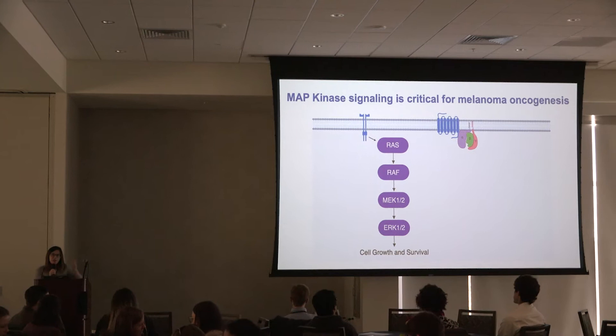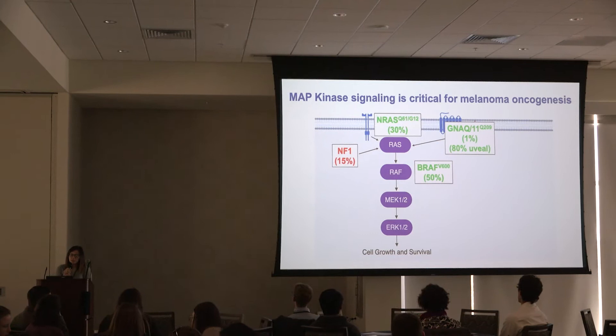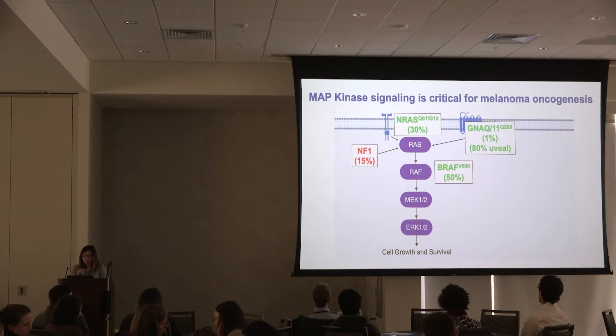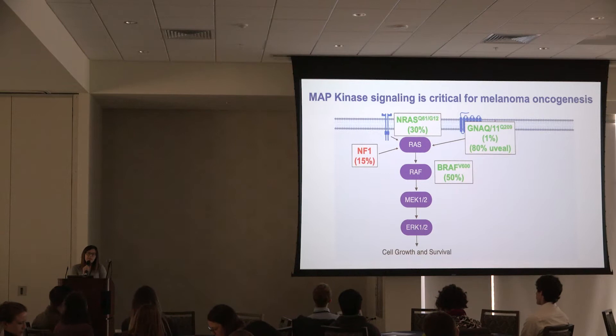Genetic mutations that drive melanogenesis almost always activate this pathway. For example, loss of NF1 function, activating mutations in NRAS or BRAF, and also the subject of this talk: GNAQ or GNA11 mutant melanomas. Although GNAQ and GNA11 mutant melanomas represent the minority of melanoma subtypes, GNAQ mutations are the most common mutation in uveal melanoma.